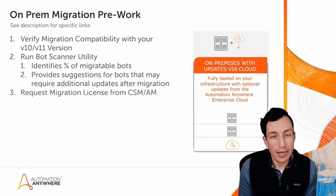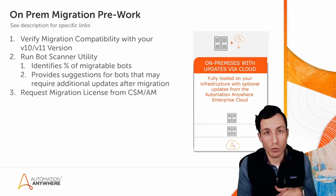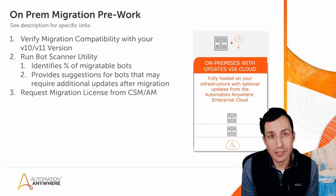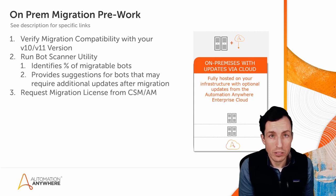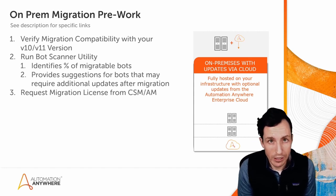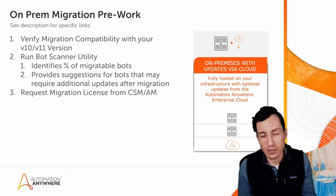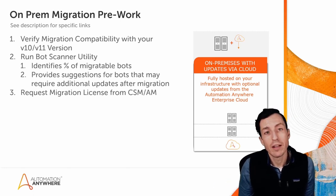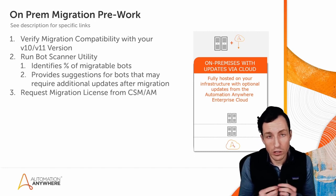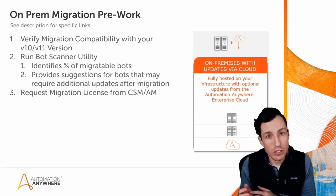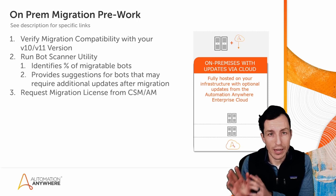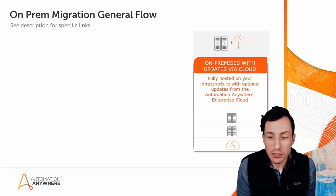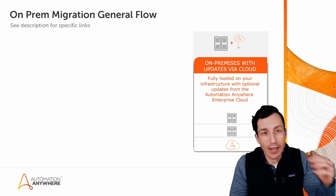The last pre-work item — and this applies whether you're doing on-prem or cloud — is to request a migration license from your CSM or account manager. For on-prem you just need the license itself. For a cloud environment they'll also send you a security token you can use with the cloud migration utility, but we're covering that in more detail in a different video.